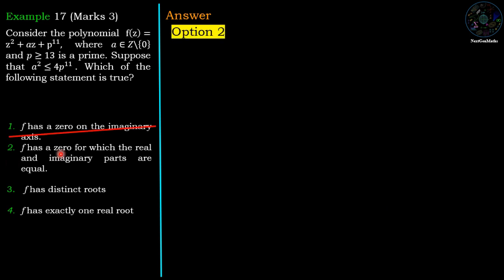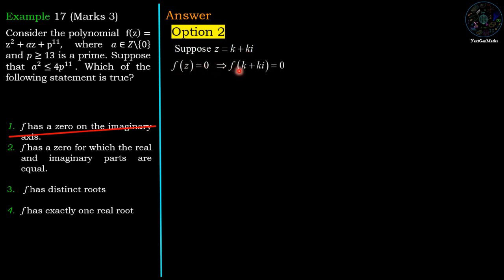For option 2, f has a zero for which the real and imaginary parts are equal. Let z = k + ki, where the real and imaginary parts are both k. If this is a zero, then f(k + ki) = 0. Substituting into the polynomial: (k + ki)² + a(k + ki) + p¹¹ = 0.